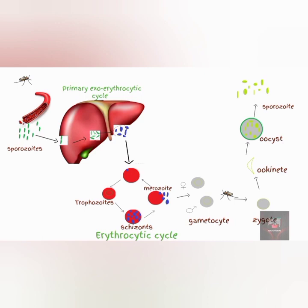Some of the merozoites of Plasmodium vivax and Plasmodium ovale released from the liver during the primary exo-erythrocytic cycle do not infect red blood cells, but rather they reinfect the liver and stay dormant for months or even years. These are referred to as hypnozoites. These hypnozoites make it difficult to eradicate Plasmodium vivax and Plasmodium ovale infection unless a drug that targets these hypnozoites is used.